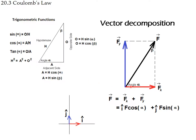To represent forces as vectors along axes, we use unit vectors: î points in the +x direction, ĵ points upward. So a force of 3 N to the right is written as 3î, and a force of 4 N upward is 4ĵ. A force at an angle F has components F·cos(θ)·î in the x-direction and F·sin(θ)·ĵ in the y-direction.